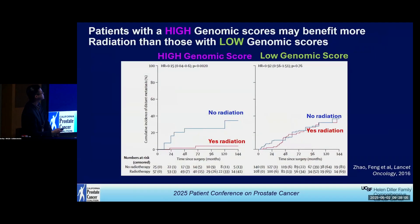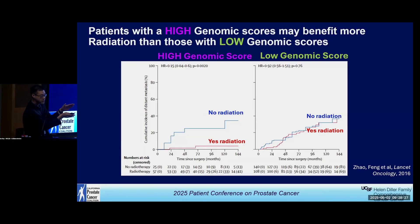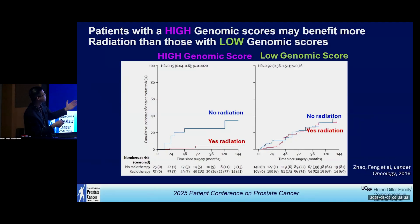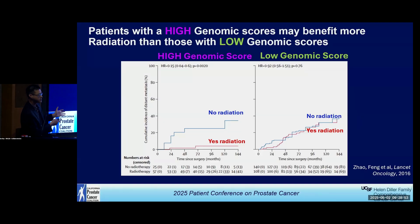Here's one example: a study published by Dr. Feng about ten years ago. Based on a genomic score his team developed, some patients had a high score and some had a low score. The question was: which patients actually benefited from radiation therapy? Patients with a low genomic score did not benefit — their cumulative incidence of developing cancer was the same with or without radiation. Whereas patients with a high genomic score really benefited, with the red line clearly suppressed, indicating these are the patients where incorporating radiation makes sense.